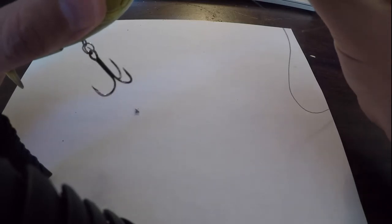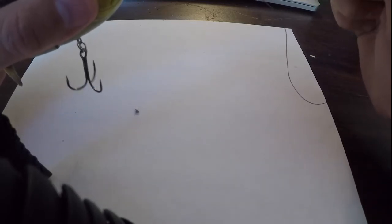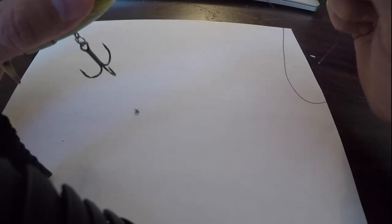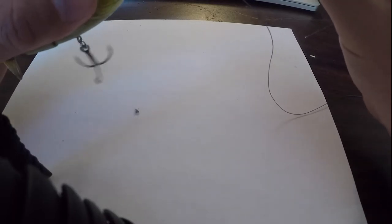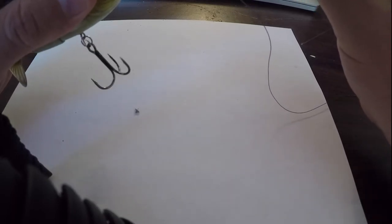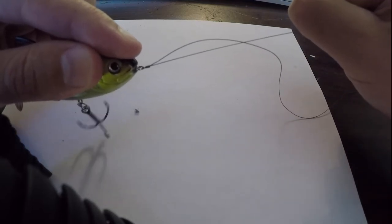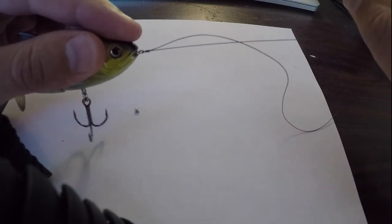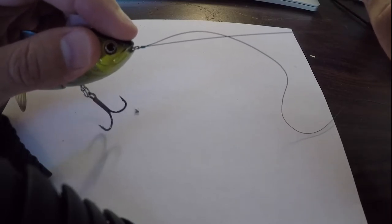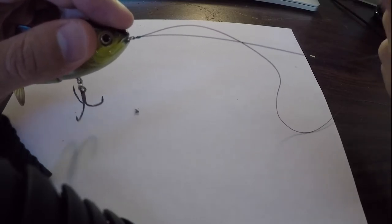Now, what I would do if I were you is pull the tag end, the very end of your line, pull it. And if it doesn't move, you're good. But if the knot starts to move around, pull that tag end nice and good. Pull both ends, but pull that tag end. If that tag end moves and the knot slides and moves around, you did something wrong.